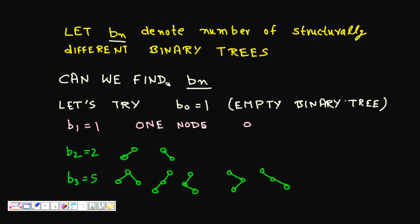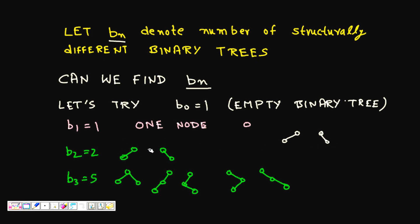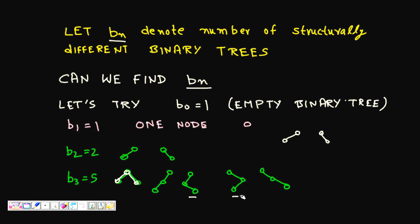Let Bn denote the number of structurally different binary trees with n nodes. When you have zero nodes, it will be an empty tree, so trivially B0 = 1. If there is one node it will just be the root node, so B1 = 1. For B2 with two nodes, you can go left or right, so B2 = 2. And B3 = 5 as we saw.